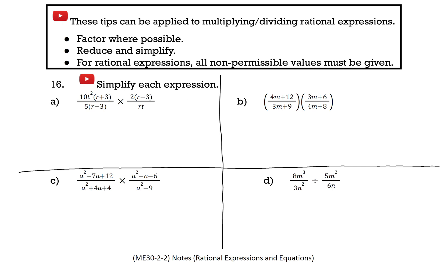Question 16: Simplify each expression. For Part A, we have 10t squared times (r plus 3) over 5, times (r minus 3) times 2r, minus 3 over r times t. When multiplying fractions, we don't need to worry about finding a common denominator — we can jump right to putting these two fractions together.